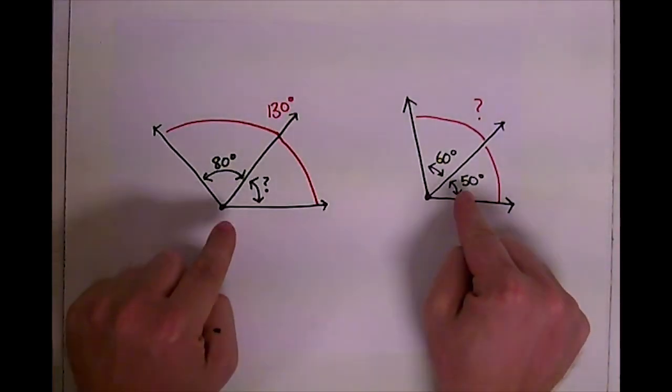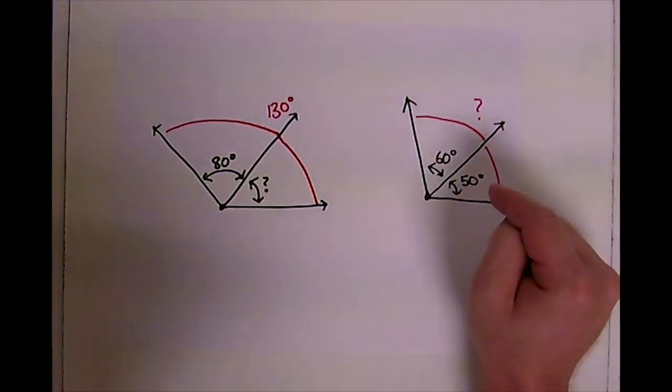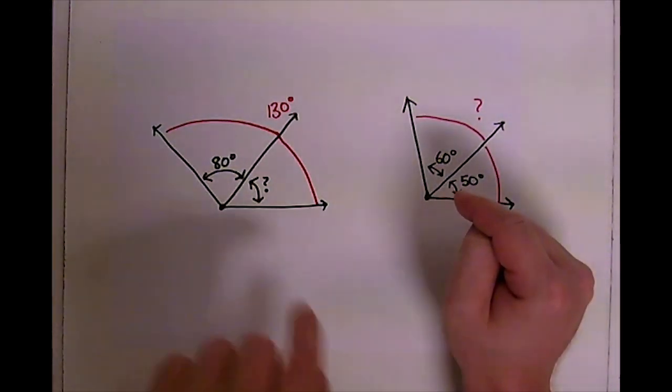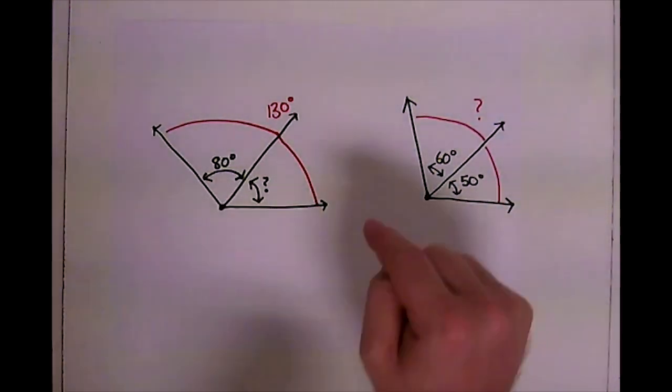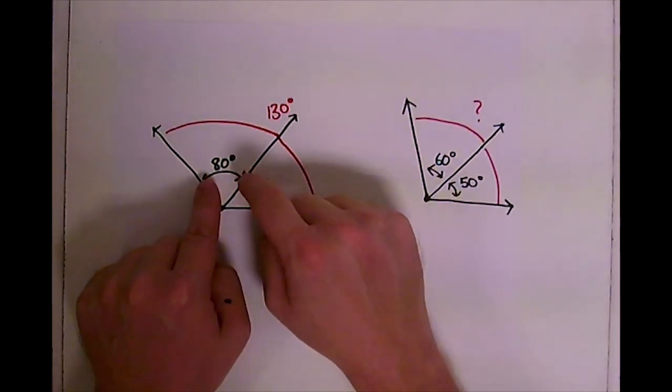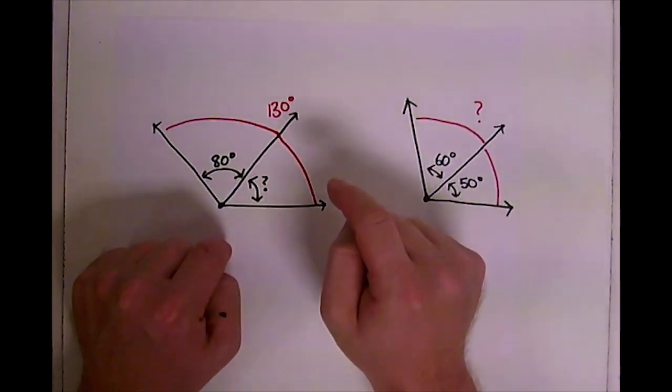So for these two examples, we don't even need to use a protractor because they're giving us enough information that we can actually take what they're giving us and either add or subtract to find the answer. So for this first problem over here, the black numbers are measuring the spaces in between the lines and the question mark just means that's what we're trying to figure out.